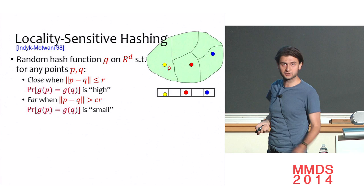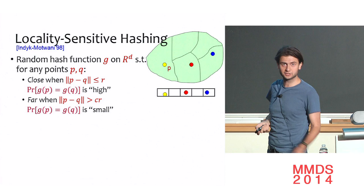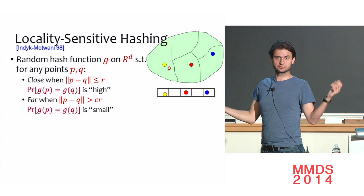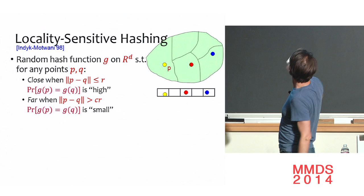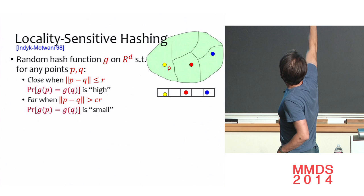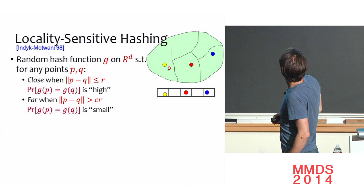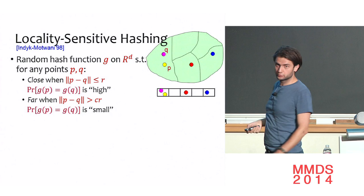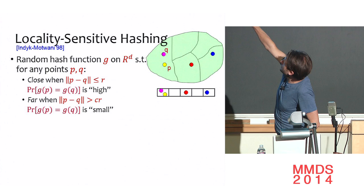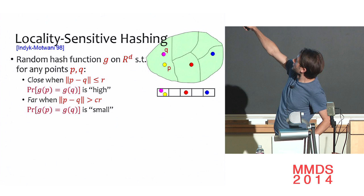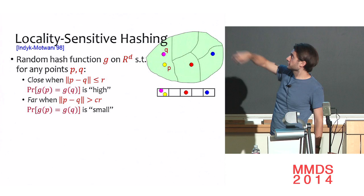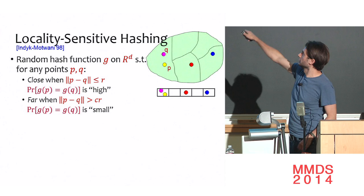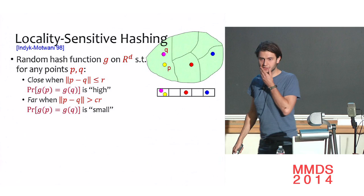Given this guarantee, the data structure is simple: construct a hash table, compute hash values for each point in the dataset, and store them in buckets. At query time for point Q, compute its hash, go to the bucket, and look at the points that collide with Q. If P is the near neighbor within distance r, with high probability it will be in the same bucket. Far points have small collision probability, so they won't appear in the bucket.